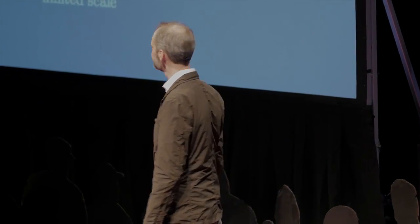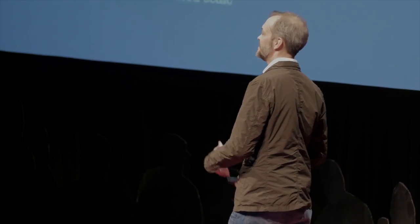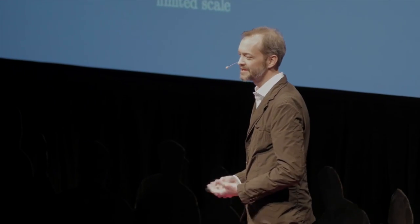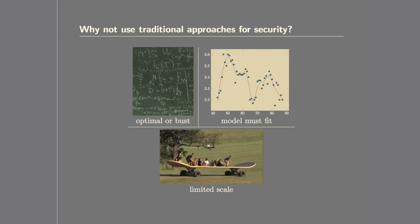The bad news is we really can't use traditional approaches as we've done in the past, and there are three reasons. The first is this idea of optimal or bust — traditional approaches tend to be either I can fix it or I can't, no middle ground, and with security I think that's a little crazy. The model-must-fit idea is that behind the scenes we're really mathematicians who love to develop mathematical models, find a solution for the model, and then apply it in real life — but we have to make so many assumptions about the real-life problem to fit it into the model that it becomes pretty unrealistic. And the last one is limited scale — we can maybe fix five computers using a cool technique, but if I need it to go to 50,000, I just can't scale it up.